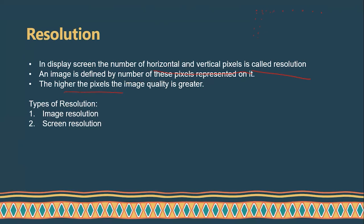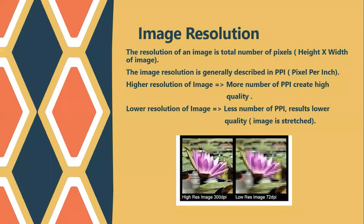I'll explain this clearly with a diagram. There are two types of resolutions: one is image resolution and another is screen resolution. Image resolution means within the screen I'm just talking about the image that is present on the complete screen — I'm just working on this image. And screen resolution is the complete screen resolution. Now we are going to discuss about image resolution.